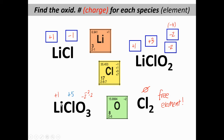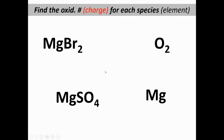LiClO₃ works the same way. Lithium is plus one; assume oxygen is minus two — three of them gives minus six. Plus one and minus six will be balanced by chlorine being plus five: plus one, plus five, and minus six all add up to zero. By knowing the lithium and the oxygen, we can figure out the chlorine. Finally, Cl₂ has to be zero because it's a free element.